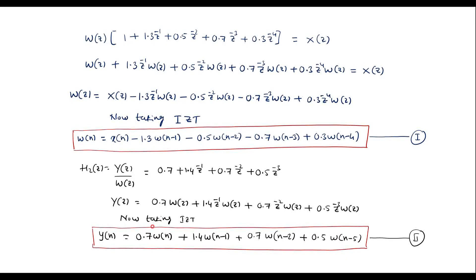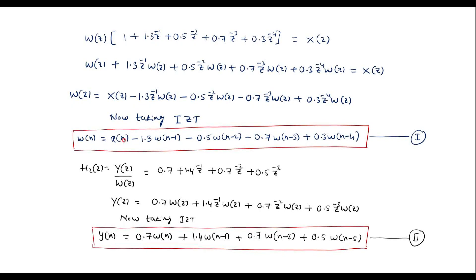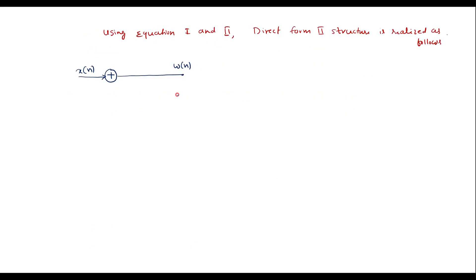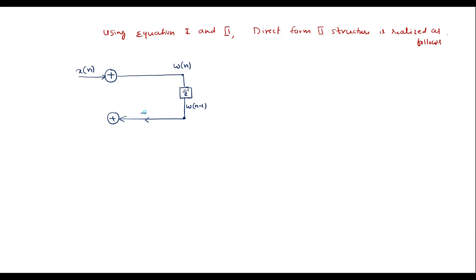Using equation 1 and 2, I will realize the direct form 2 structure. Let the input be x(n) and the intermediate output be w(n). From equation 1, w(n) = x(n) − 1.3 w(n−1). The signal w(n−1) is obtained by passing w(n) through a delay element Z⁻¹. The output of that delay element is w(n−1), which is fed back with multiplication factor −1.3. Next, we have −0.5 w(n−2), obtained by passing w(n−1) through another delay element to get w(n−2), with multiplication factor −0.5.